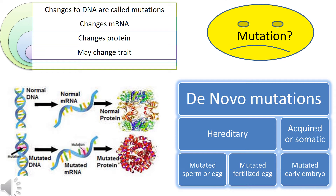If the mutation is hereditary, there are three reasons why. First, the mutation has occurred in the sperm or egg, and the resultant offspring will carry that mutation. Second, the sperm or egg was fine, but once the egg is fertilized the mutation occurred at that stage, and the offspring will be mutated. Third, the egg, sperm, and fertilized egg were all normal, but once the fertilized egg converted into an embryo, the early embryo went through the mutation at that stage, and again there will be mutation in the offspring.